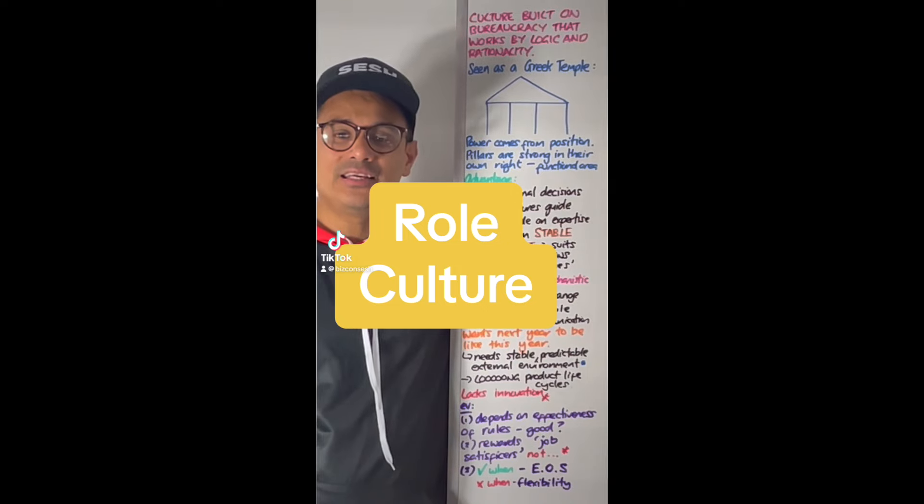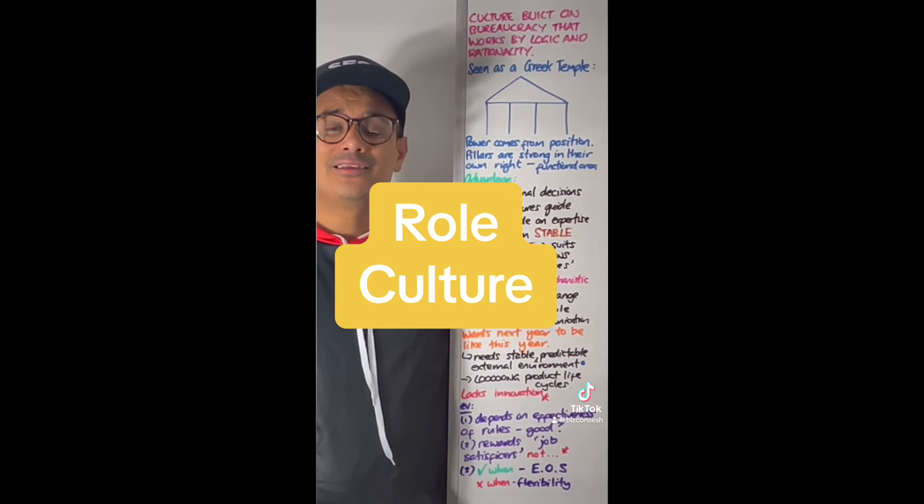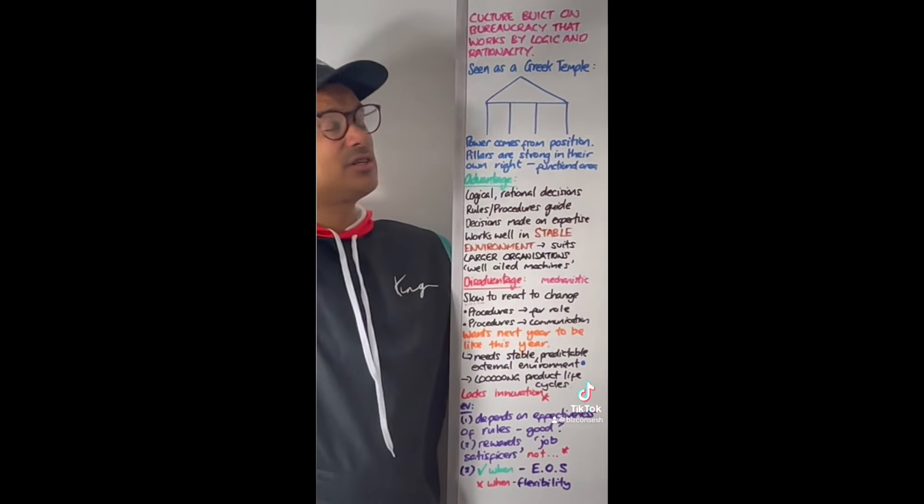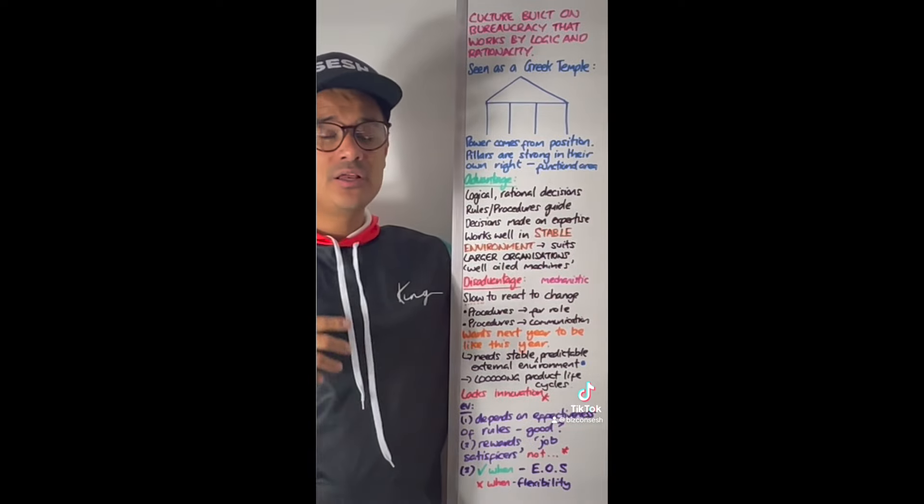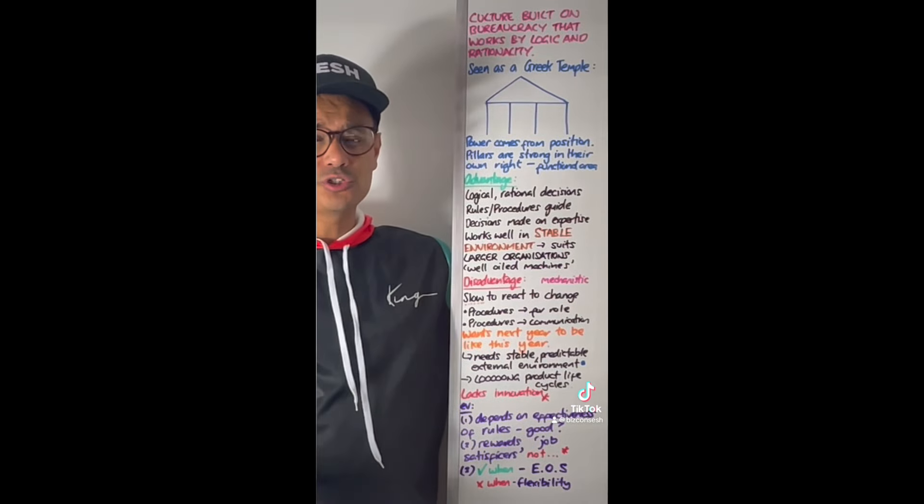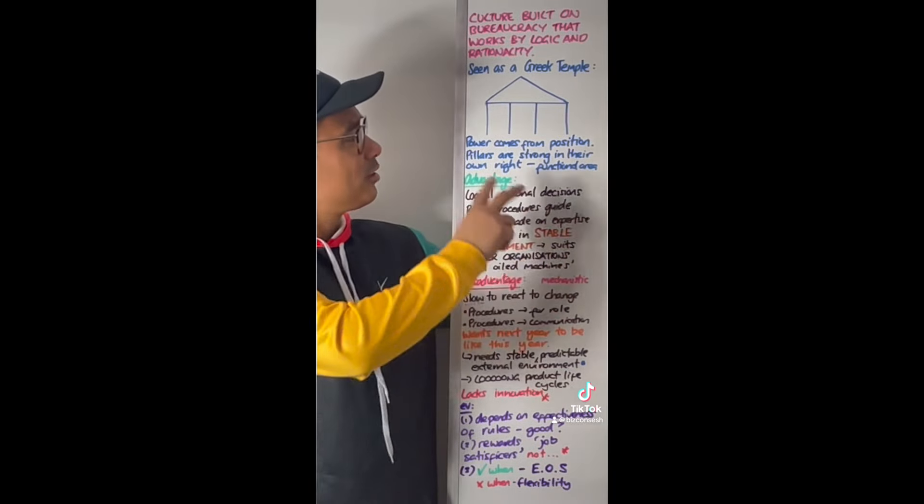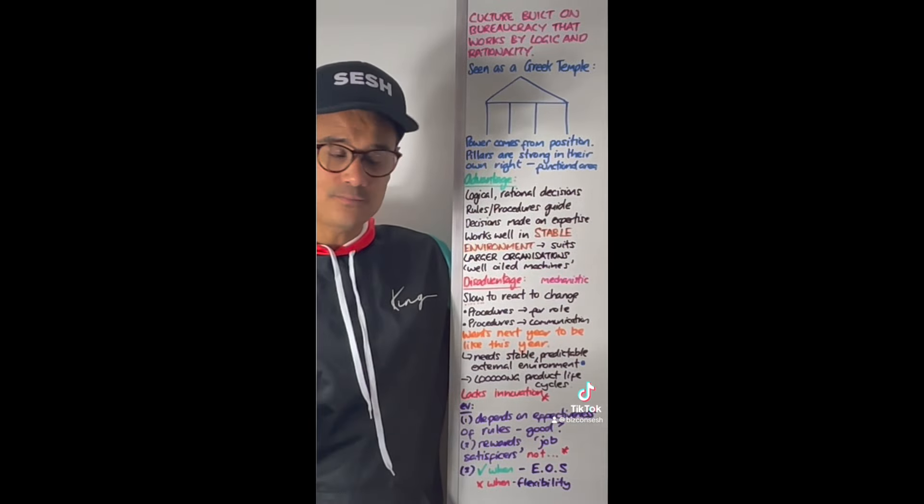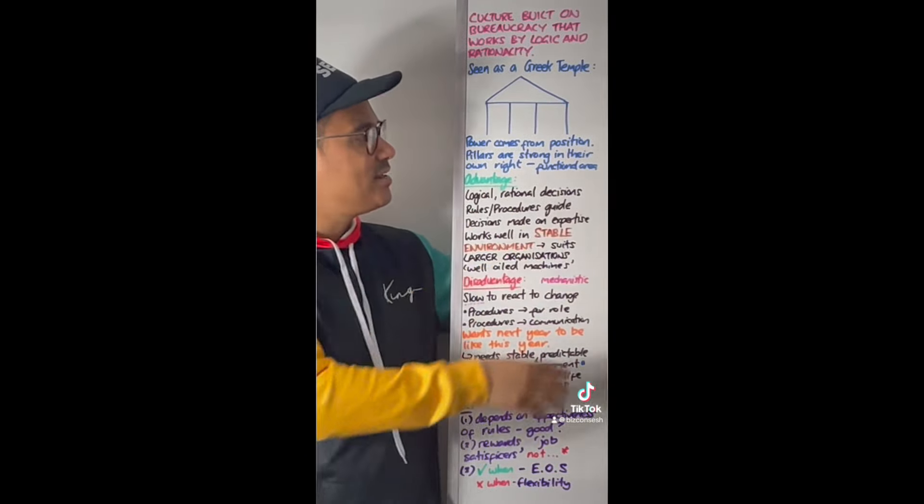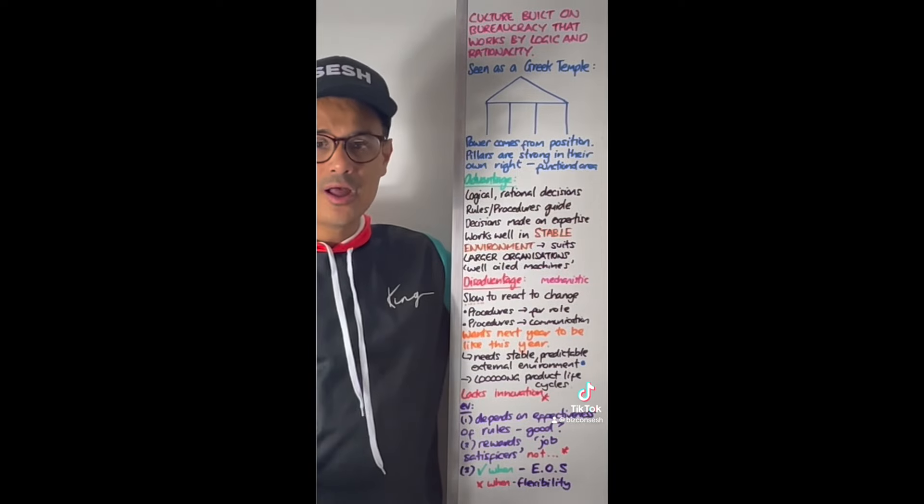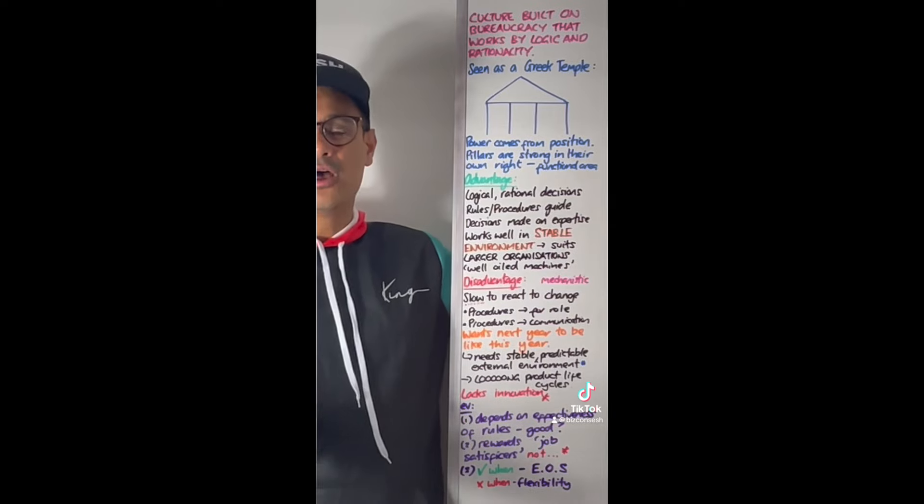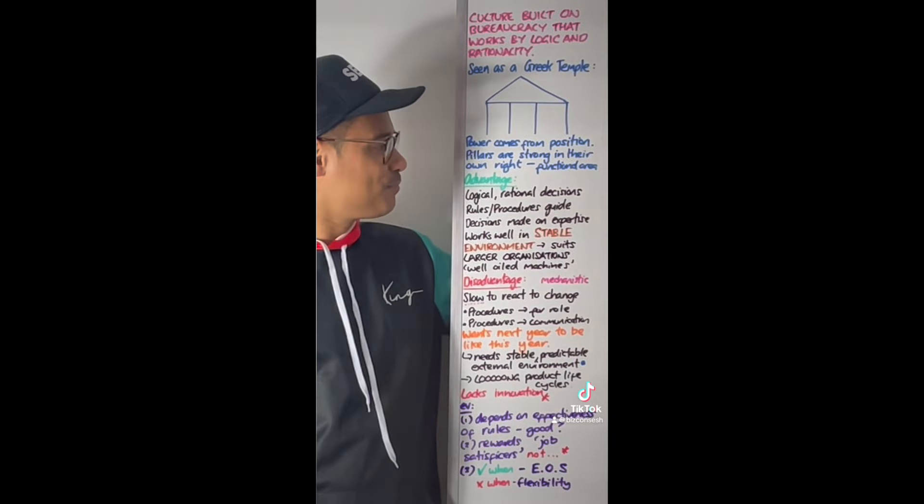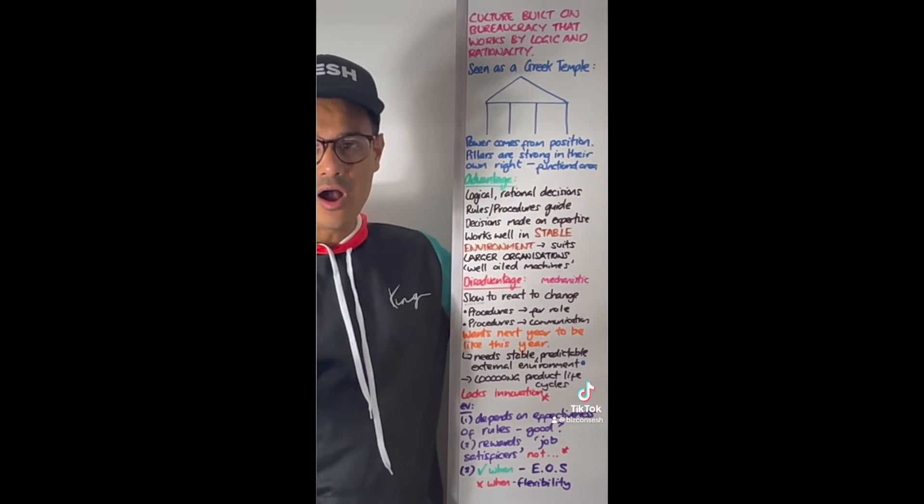Role culture is part of Handy's organisational cultures. Role culture is built on bureaucracy, based on logic and rationality. Handy saw role culture as like a Greek temple, where power comes from position. These four pillars are strong because they're built on expertise. You could see those four pillars as the functional areas: operations, HR, marketing, and finance.